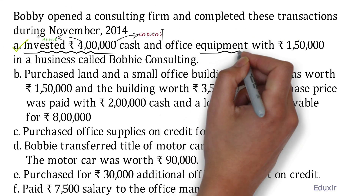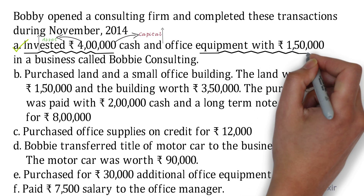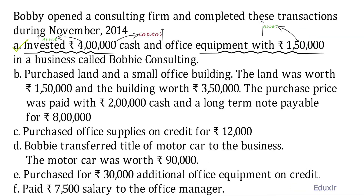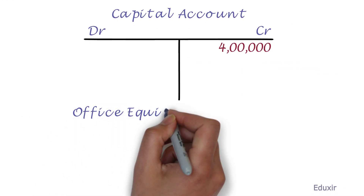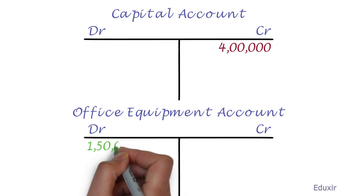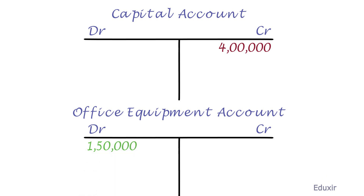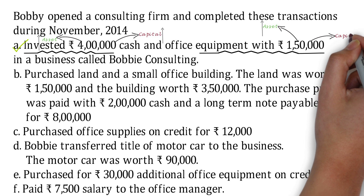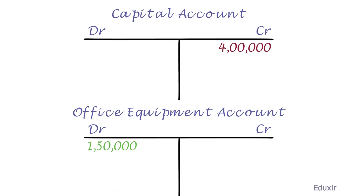In addition, the office equipment is brought into the business, which increases the asset. The rule to record an increase in the asset is to debit the asset account. Let us prepare the T account for office equipment. We need to add 1 lakh 50 thousand rupees on the debit side of the office equipment account. As this asset is brought into the business by the owner, it increases the owner's equity or capital, so we credit 1 lakh 50 thousand rupees into the capital account. That covers transaction A.